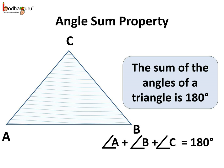Here, in the triangle ABC, if we add all the angles, that is angle A, angle B and angle C, the sum would be equal to 180 degrees.